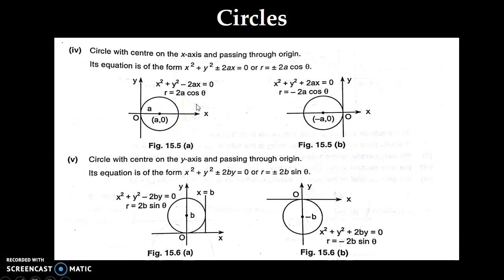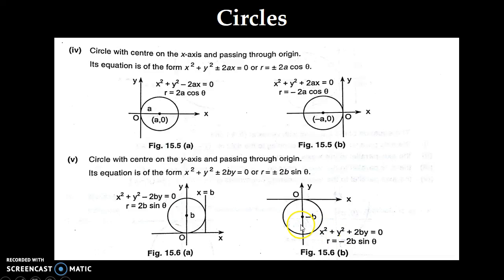The next four graphs or curves are circles, but the center of the circle is not at the origin — that is, zero zero — but at some different points, such as (a, 0), (minus a, 0), (0, b), or (0, minus b), and so on.